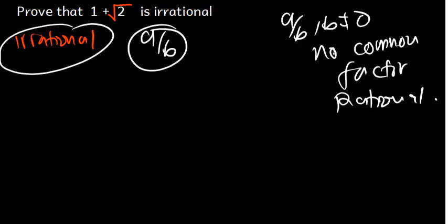Irrational numbers are numbers which cannot be expressed in the form of a over b. For example, the square root of 2, pi, and the number e (the exponential) are all irrational numbers.